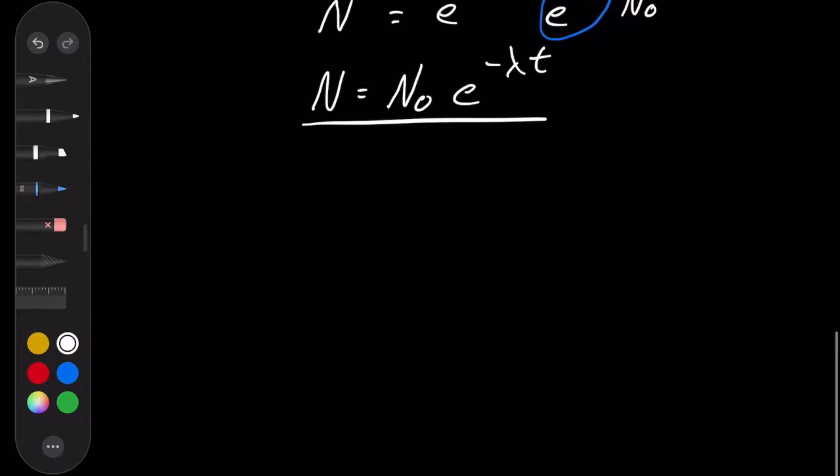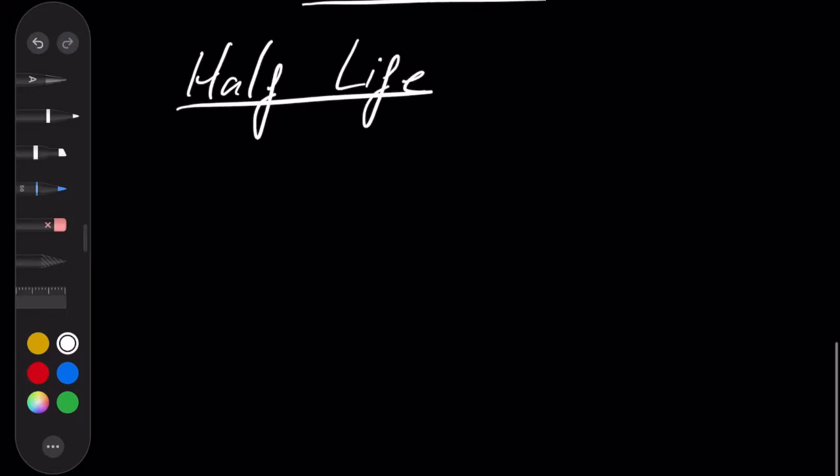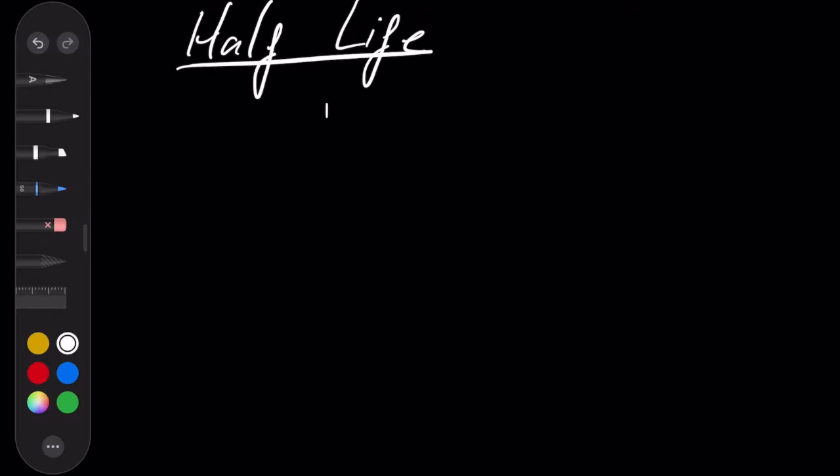Now I want to look at the idea of half-life. Coming back to our equation, if we plot a graph of n versus t, we have this exponential curve.